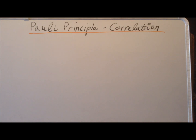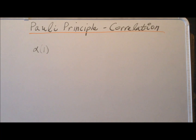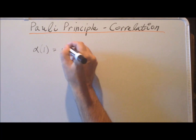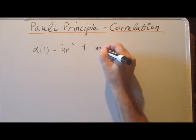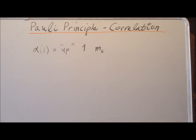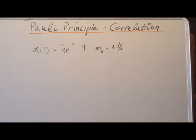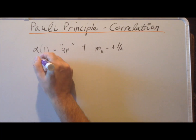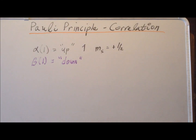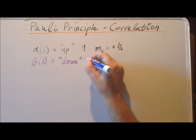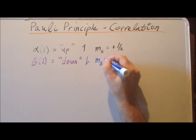Recall that we can define two different spin functions. The first we call alpha. Alpha of one means that electron number one has an up spin — we represent this graphically as an arrow pointing up — and it corresponds to m_s equal to plus one half. We can also define a second function, which we call beta. Beta of one means an electron with a down spin, represented graphically as an arrow pointing down, equivalent to the quantum number m_s of minus one half.